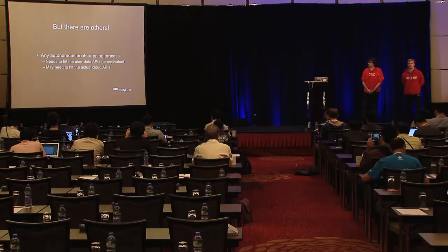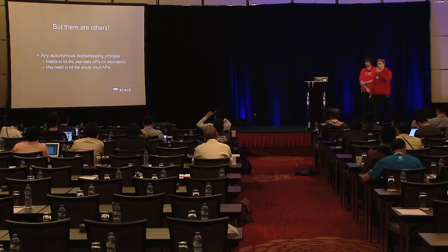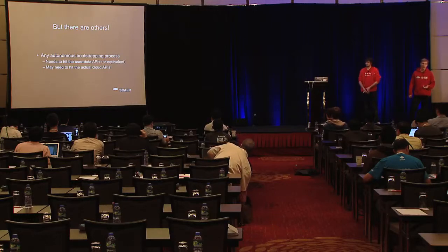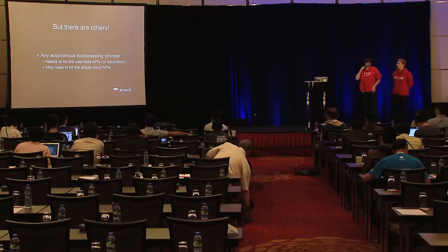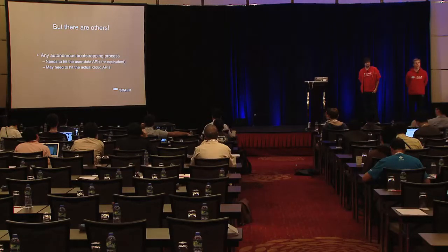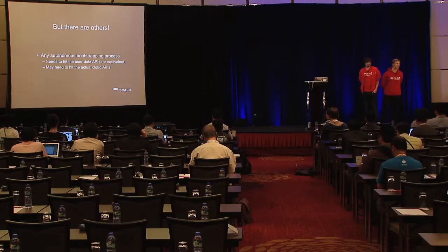There are actually a lot of different use cases for cloud-aware applications, not just that. Any autonomous bootstrapping process, like if you're building an application that you want to be portable, an application you want to be able to move from one cloud to another, or if you're interested in cloud bursting, if you're interested in hybrid clouds — having applications that are aware of where they're being deployed will help you achieve that portability. Some examples are when your application needs to hit the user data APIs, the metadata APIs, to be able to understand that configuration data. And in some cases you may need to hit the actual cloud APIs for data that's not available through the metadata servers.